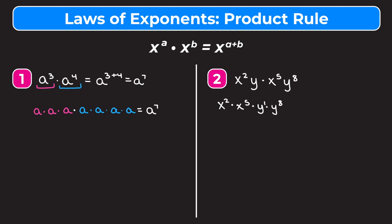We want to remember that anything just by itself without an exponent — so we just have this y here — is the same as y to the first. I always add in that first power so I don't forget to add it. So x squared times x to the fifth: we add the exponents, two plus five is seven, giving us x to the seventh. And y to the first times y to the eighth: we add to get y to the ninth. We cannot combine x to the seventh and y to the ninth because they don't have the same base, so our final answer is x to the seventh times y to the ninth.